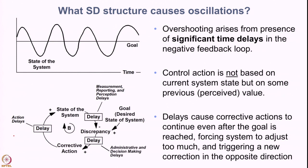Let us observe the causal structure shown on the bottom left. We have the state of the system, the goal of the system, and the difference between the state and the goal observed as a discrepancy. Based on the discrepancy, a corrective action is taken which affects the state of the system. This loop is a negative feedback system. However, one addition to this system is the presence of delays.